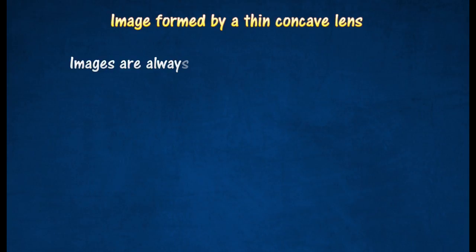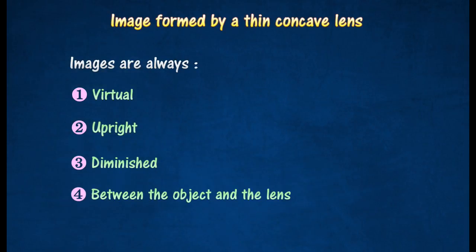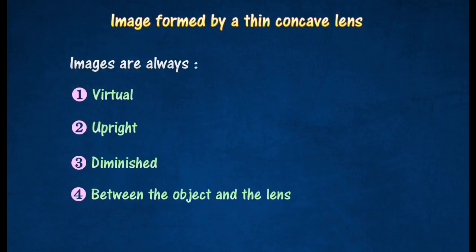The image formed by a concave lens is not dependent on the position of the object from the optical center. The images are always virtual, upright, diminished, and placed between the object and the lens.